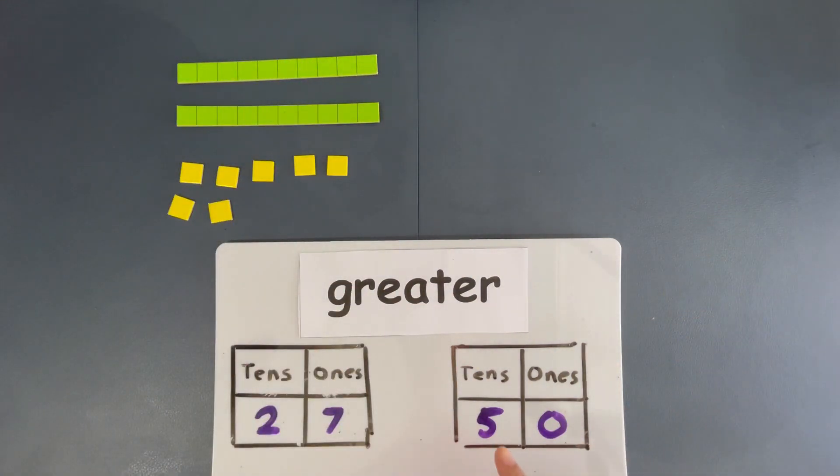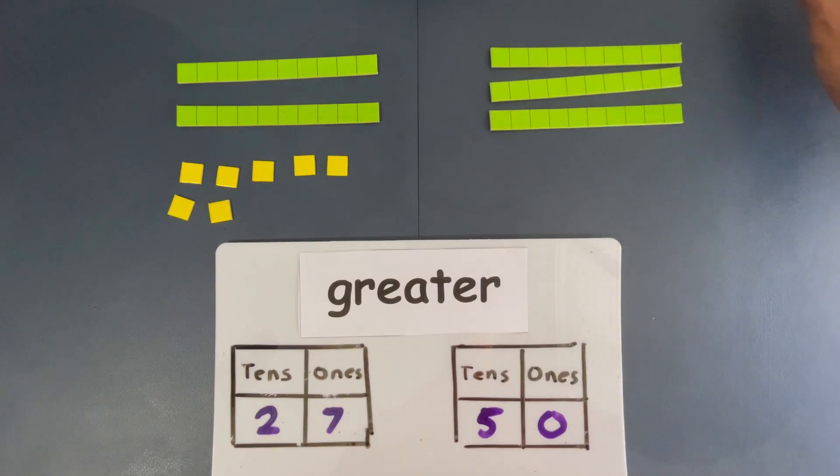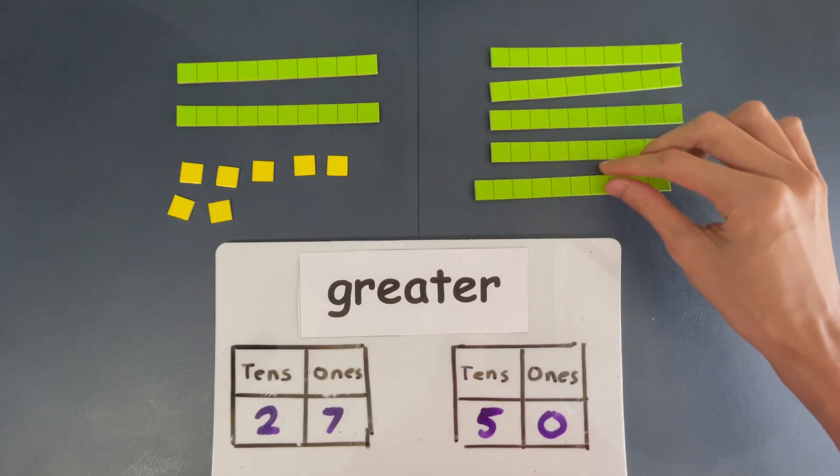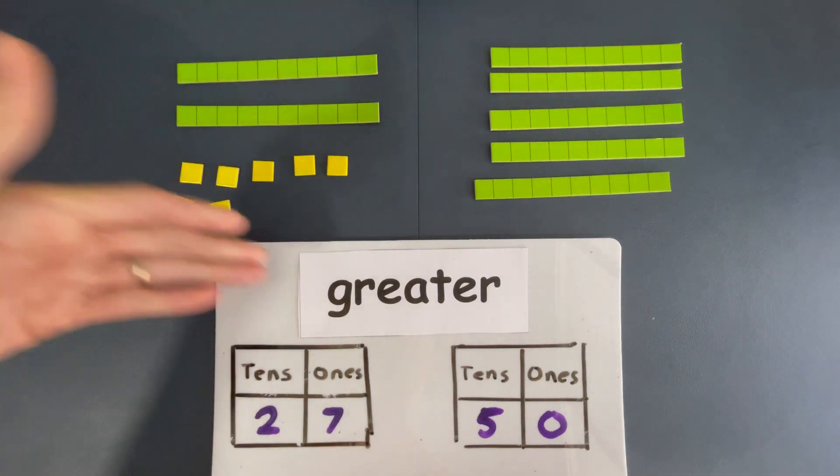Now, let's make 50, which is made out of five tens and zero ones. Nothing. Okay? So, one ten, two tens, three tens, four tens, and five tens. Okay? So, there are five tens. 50. So, this is 50, and this is 27.